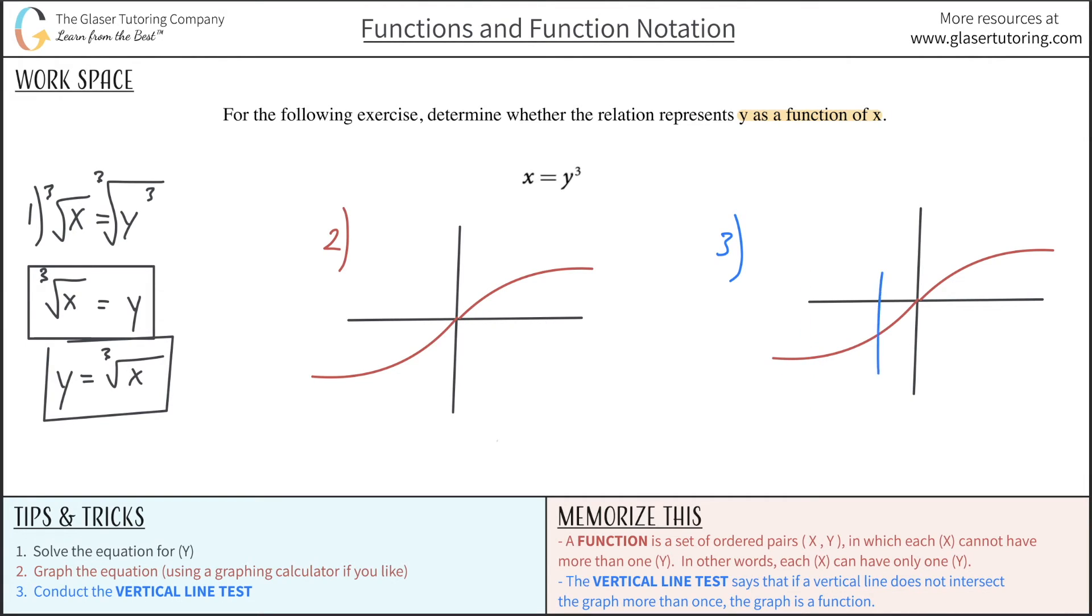So I'm going to draw some vertical lines. It only intersects the graph one time there. It only intersects at one time there. Remember, the graph is in red. It only intersects at one time here. And et cetera. It only intersects at one time there as well.